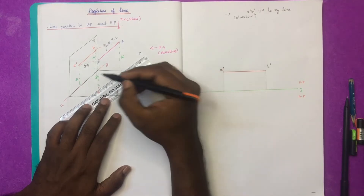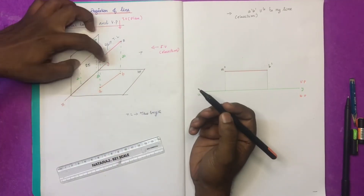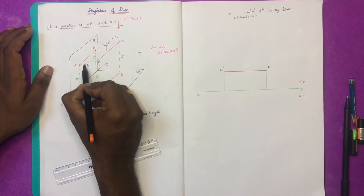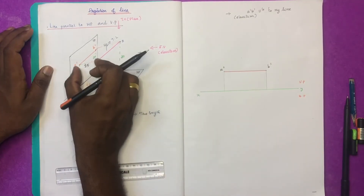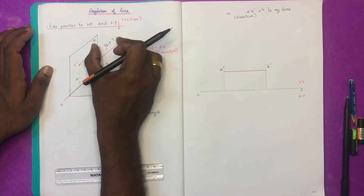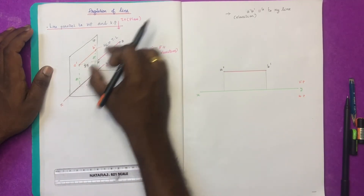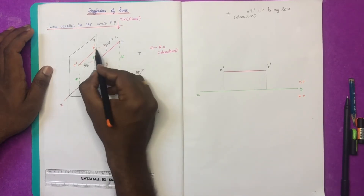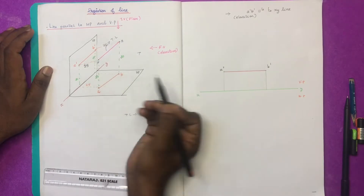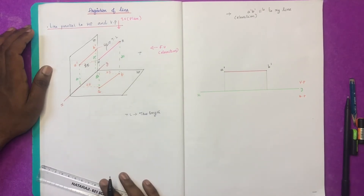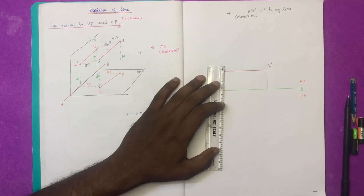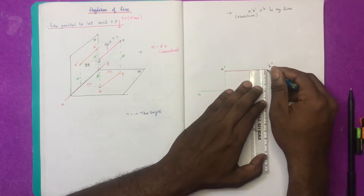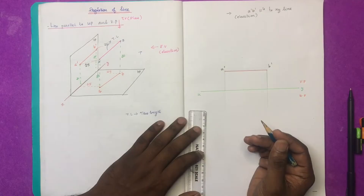It will be the top view because it is 25 mm distance away from VP. If B is also 25 mm distance away, because this line is parallel to VP — either A or B is 25 mm. In VP, this distance is equal to 25. The projectors will be in the same line. The A line will be A dash, and B dash is B.